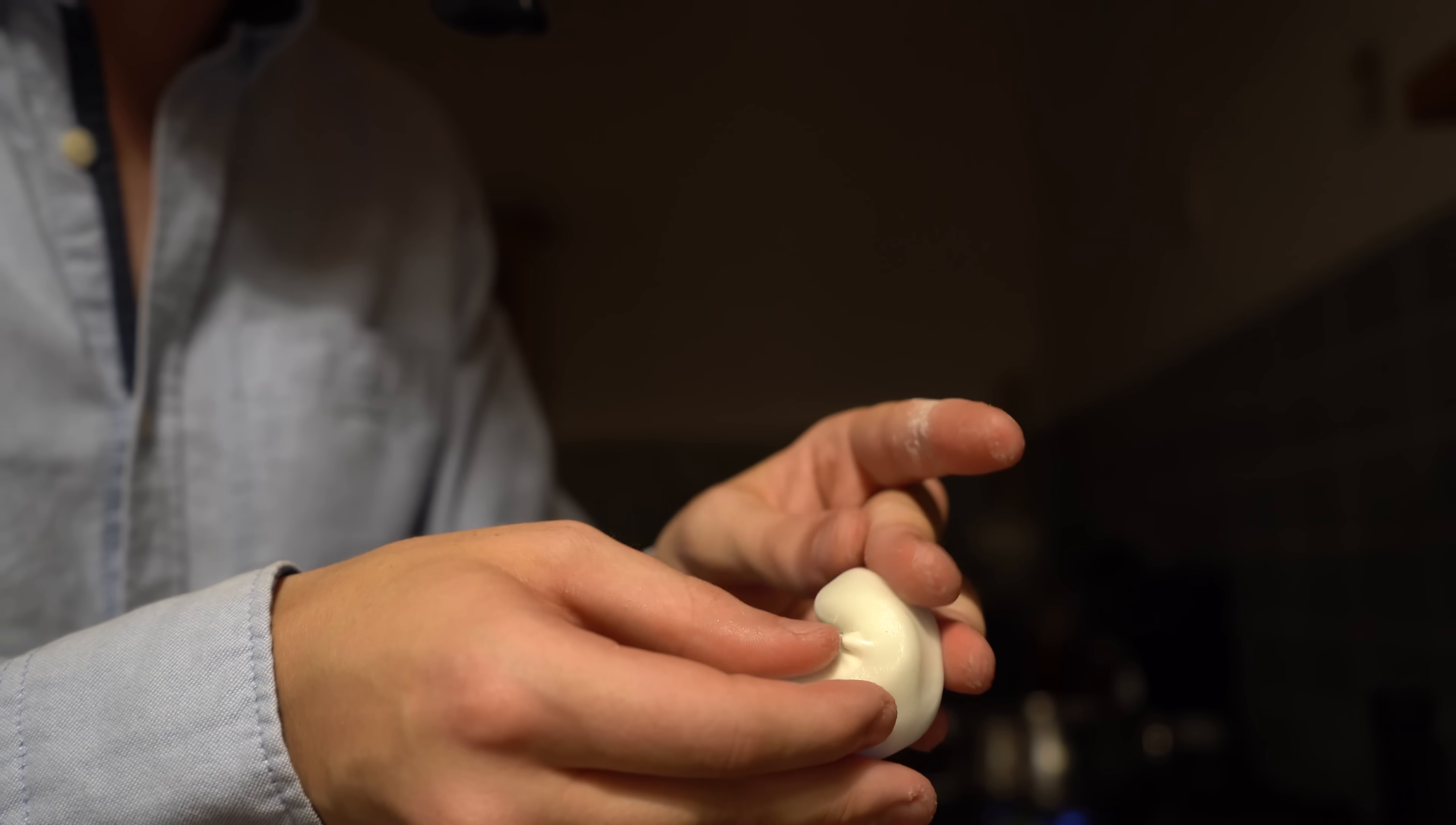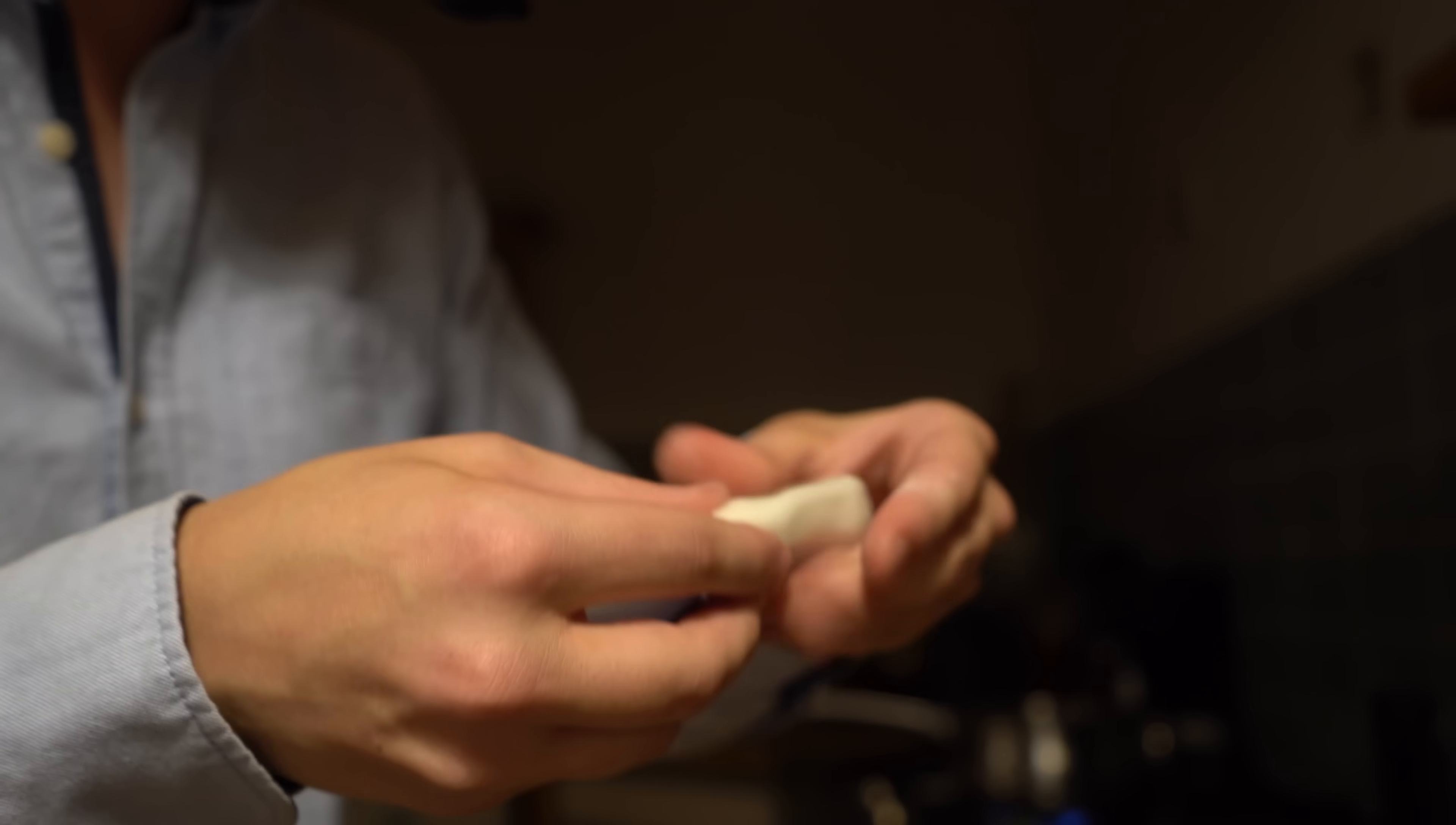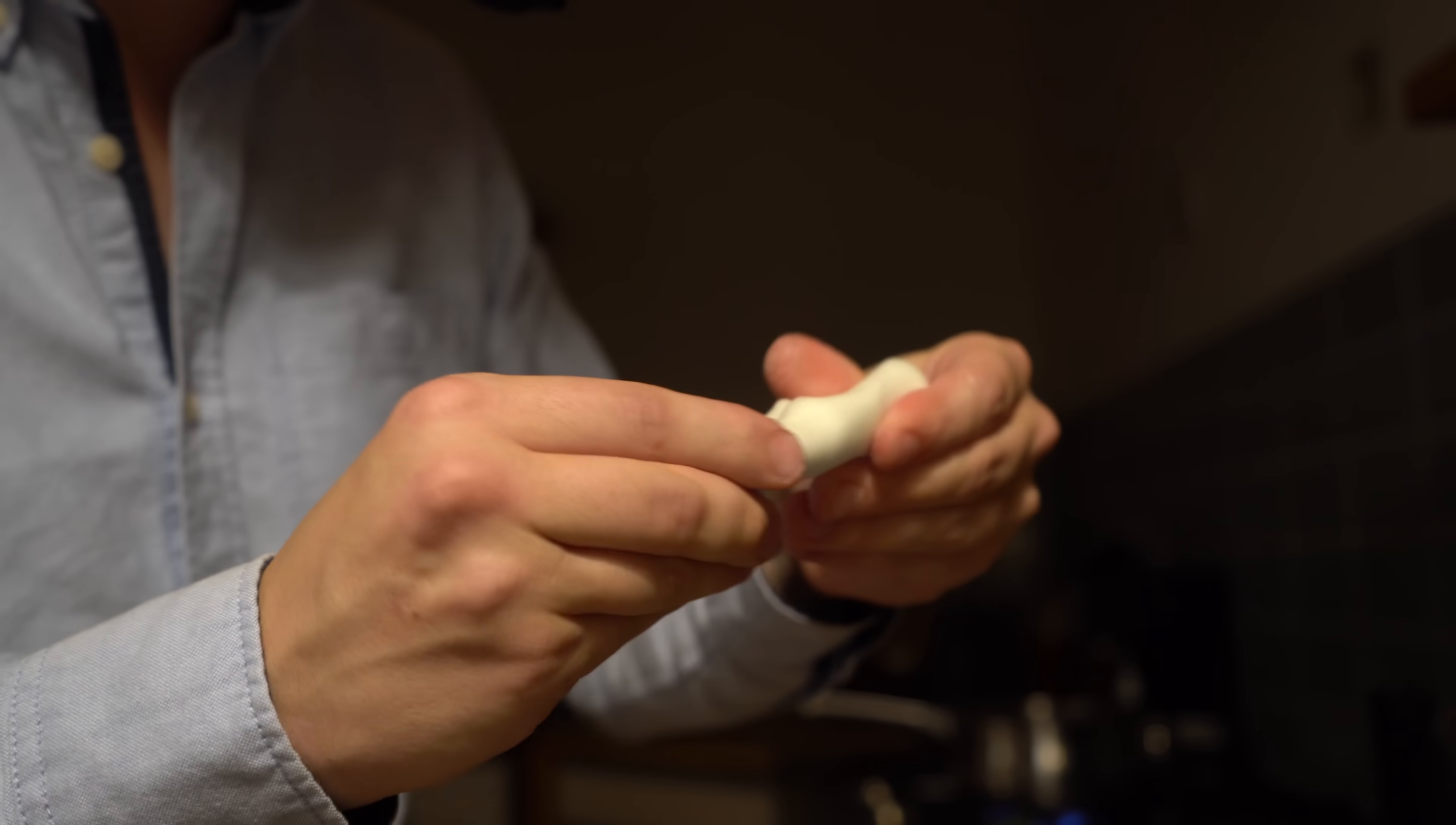If you add too much, the plastic can get a little bit too brittle when it finally sets. So you don't want that. I think when you start feeling the surface go a little bit grainy, you can get the sense that there's enough powder in there. And I'm starting to feel that now.